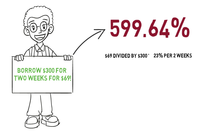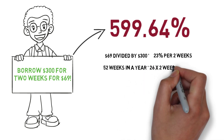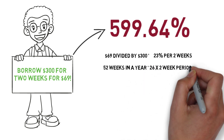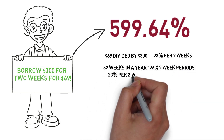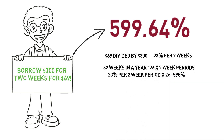Now you have to convert that into a simple annual rate. Payday loans are not allowed to be compounded continually. To do that, we have to figure out how many two-week periods fit into a year. Your first instinct is to think: well, there are 52 weeks in a year, so that's 26 two-week periods. Multiply 23% per two-week period by 26 to get 598%. But that's not actually the exact formula used.